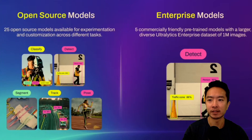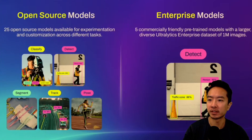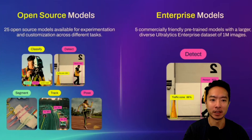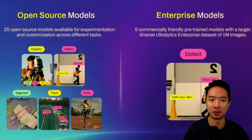YOLO 11 has open source models as well as enterprise models. For the open source models, there are different tasks it can perform as before: it can classify things, detect objects, segment, track, and also do pose estimation. The main difference is that the enterprise version has five commercially friendly pre-trained models with a larger, diverse dataset of one million images, and currently supports object detection.